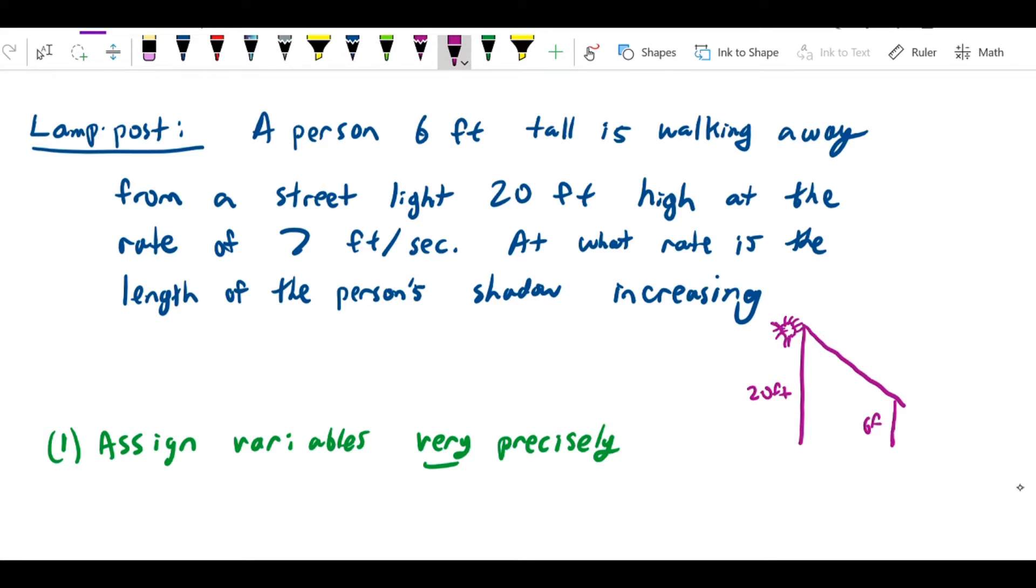It's a lightbulb with the rays of light coming out of it and the lightbulb is casting a shadow on the person. So basically this is the length of the shadow and this is the distance the person is away from the lamppost.